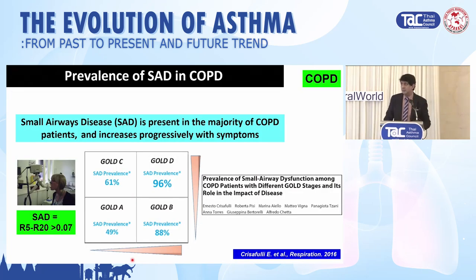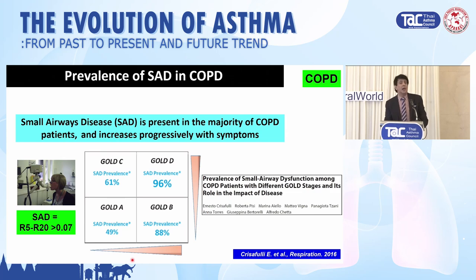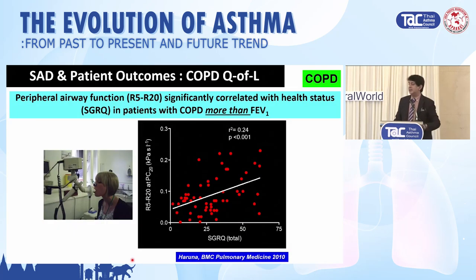Doing the same exercise for COPD: what is the prevalence of small airways disease in COPD? In GOLD A, about 50%, going up to nearly 100% in GOLD D. So even in mild COPD, patients have small airways disease.